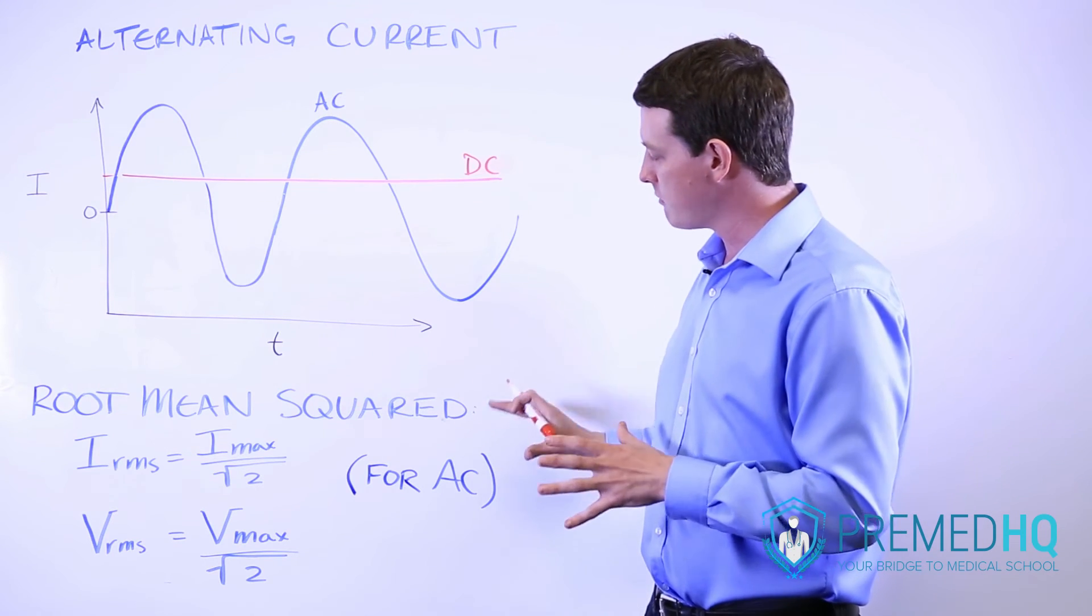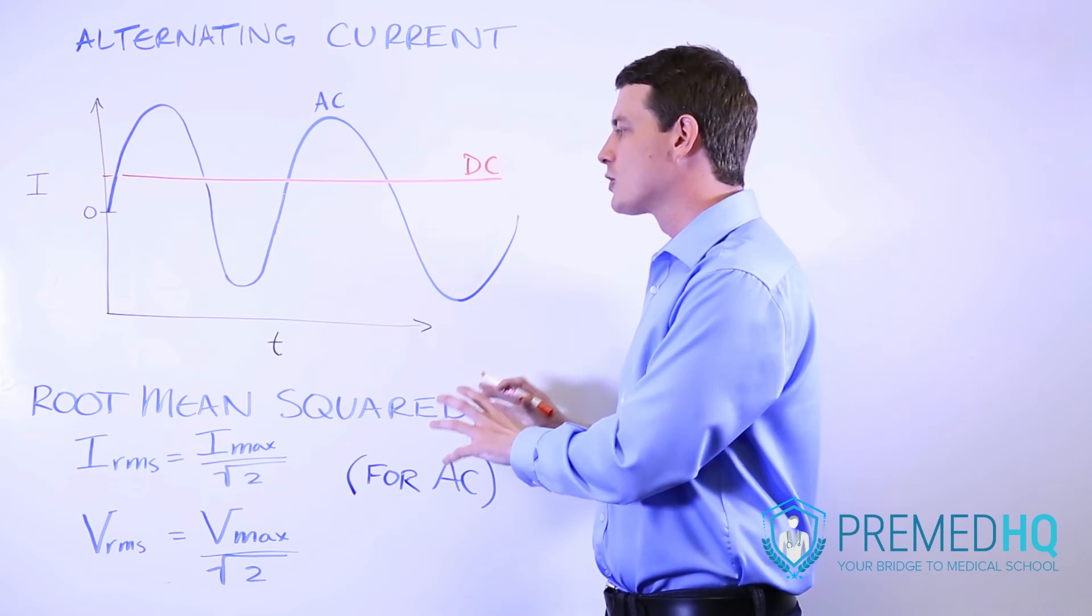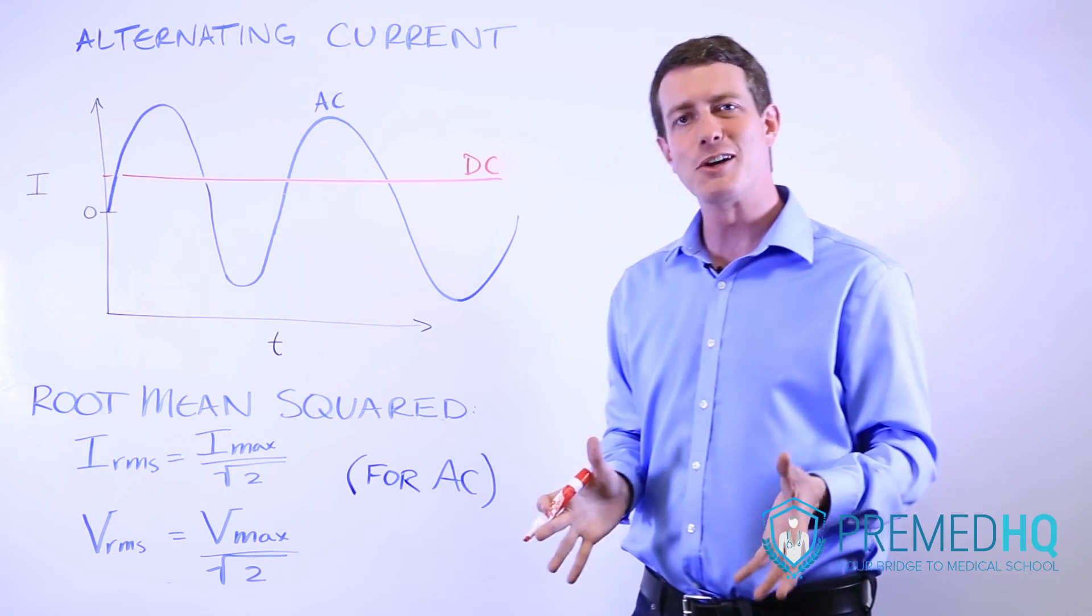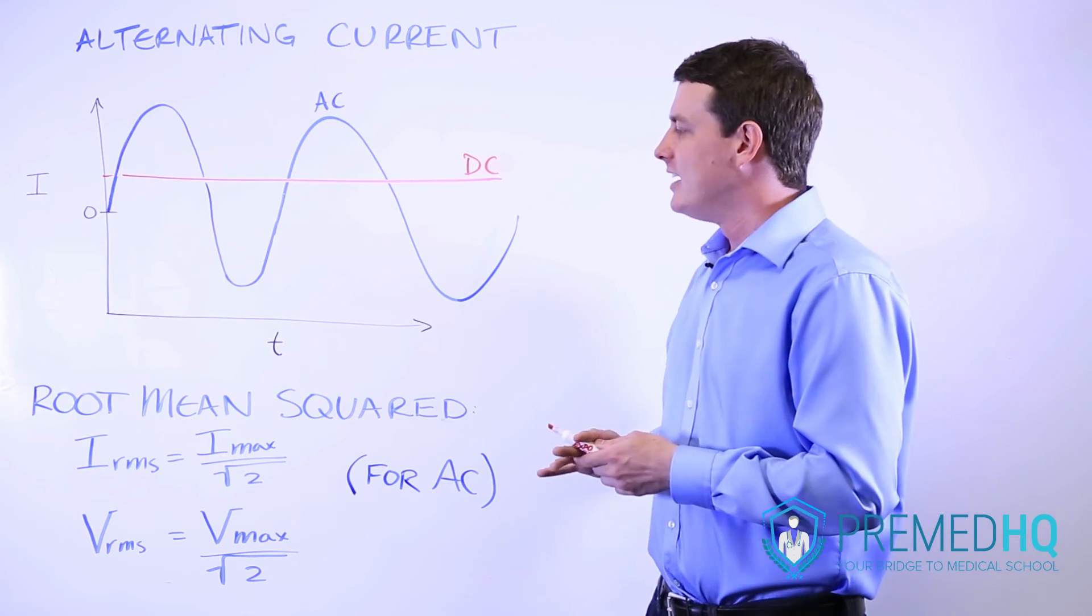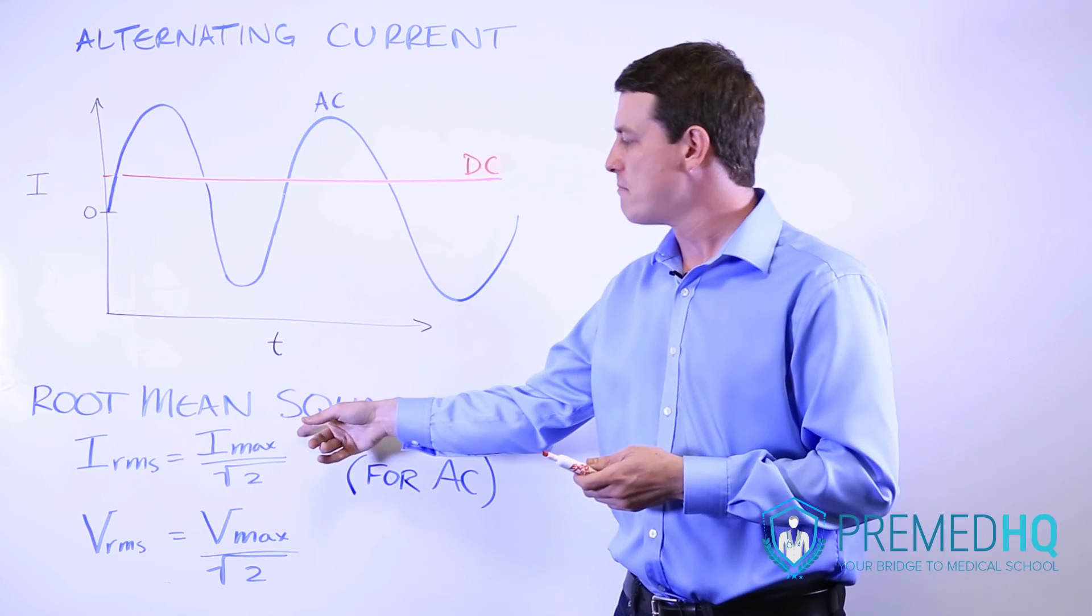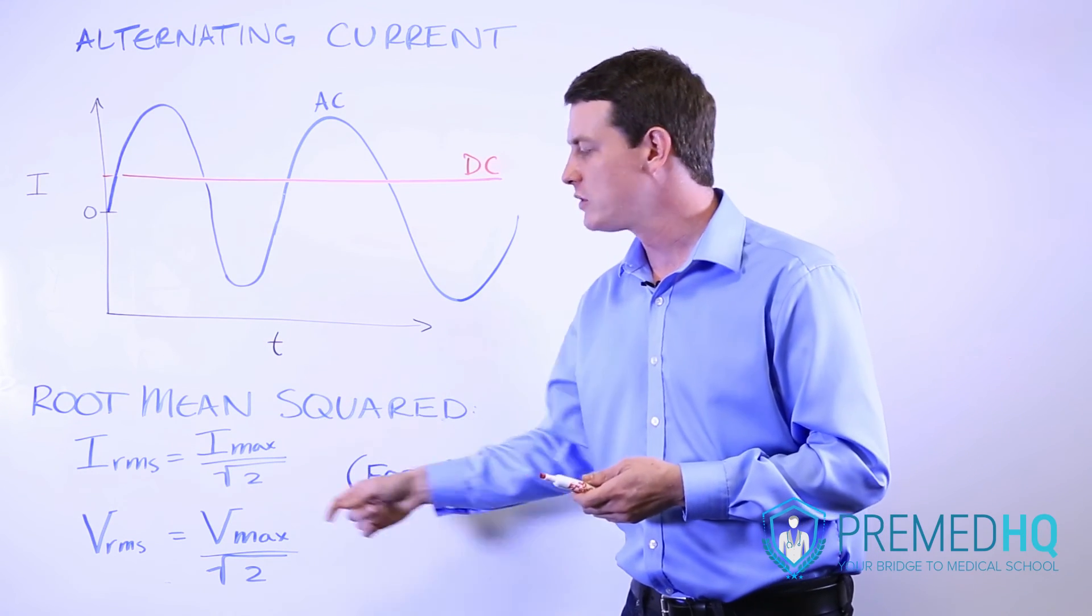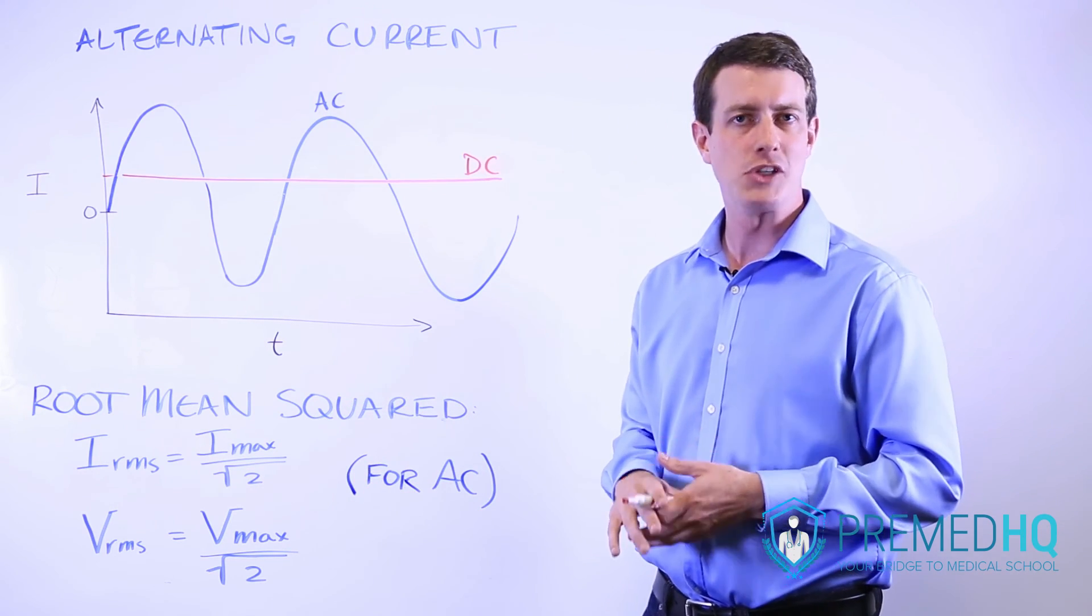Just remember that you use root mean squared calculations only when you're considering alternating current, and that the formula used is the maximum of either current or voltage divided by the square root of 2.